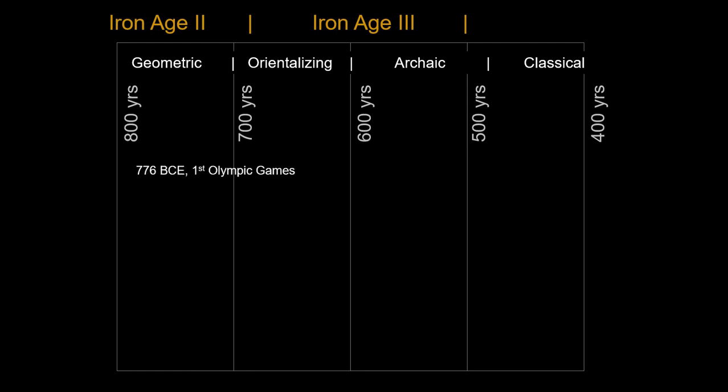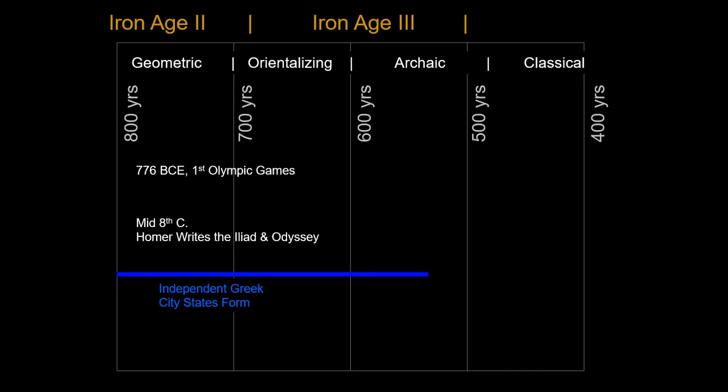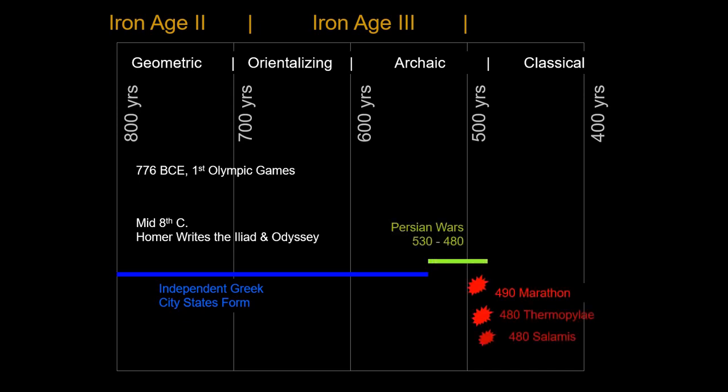Some things being developed even at an early date: one is the Olympic Games. Greeks loved sports — the Olympic Games is only one of many games, including the Pythian Games, with different cycles of four, nine, or three years. This is also the era when Homer writes down the Iliad and the Odyssey, the great epic myths of Greek mythology, sometime in the 8th century. We then see independent Greek city-states form, leading to a conflict with Persia — the defining period of Greece — with key battles: Marathon, Thermopylae, and Salamis.